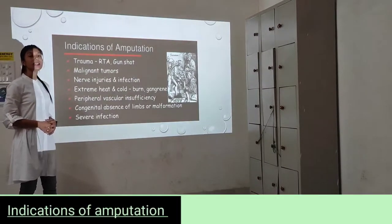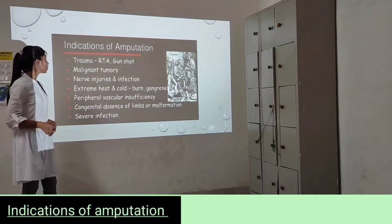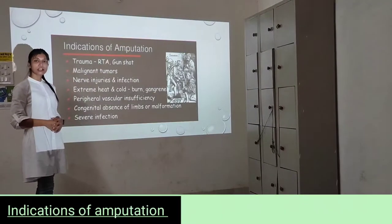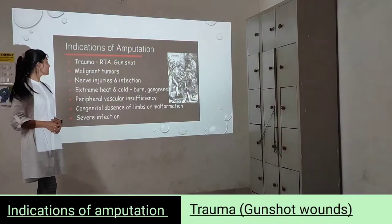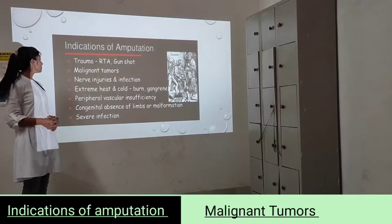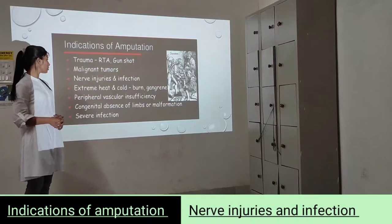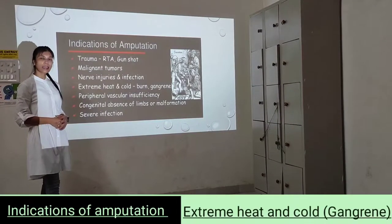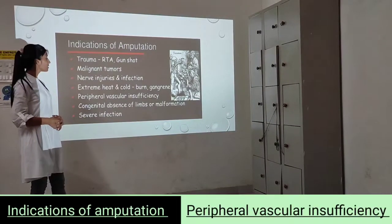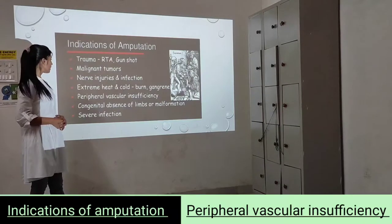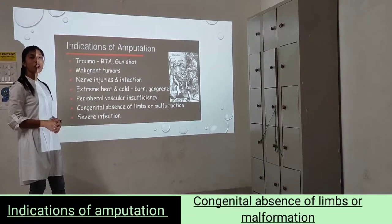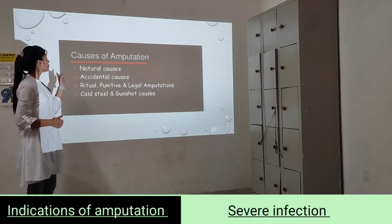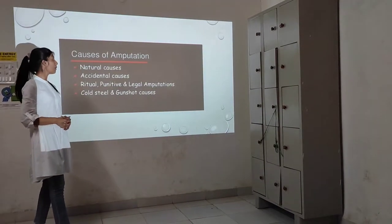What are the indications of amputation? Trauma including road traffic accidents, gunshot injuries, malignant tumors, nerve injuries and infections, extreme cold, burns, gangrene, peripheral vascular insufficiency, congenital absence of limb or malformations, and severe infections.